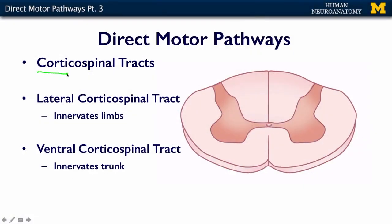In this segment, we'll talk about that final bit of the direct motor pathway, and we call it the corticospinal tract. It's called corticospinal because it starts in the cortex and it ends in the spinal cord. The same upper motor neuron that started way up in our motor cortex has finally crossed the midline and come down to the spinal cord.